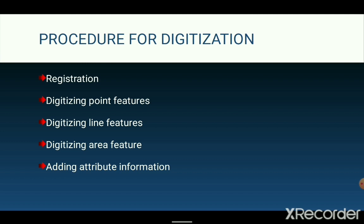Stage 4 involves digitizing areal features. Areas or polygons are digitized as a series of points linked by line segments. It is important to note that the start and end points must join to form a complete area or polygon. Stage 5 involves adding additional attribute information to the digitized polygon, line, or point feature.